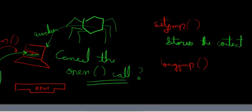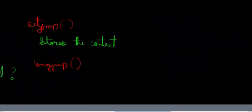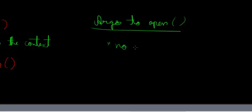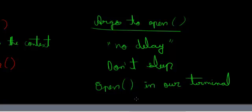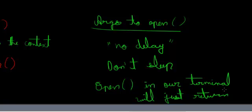It may also need to readjust data structures if there is an error with the device being accessed. For example, if the device is not configured, the open system call will fail and the allocated data structures have to be returned. You may also call open with the no-delay option, which means don't sleep. So in our terminal example, open will just return, and it will be difficult for the user process to tell whether the hardware connection was established or not.